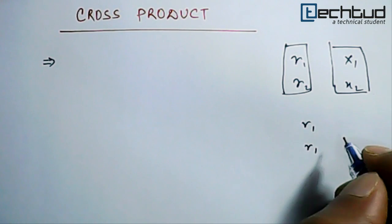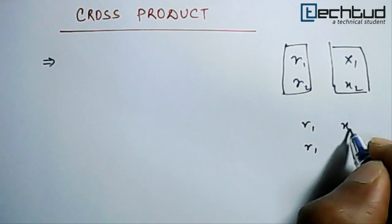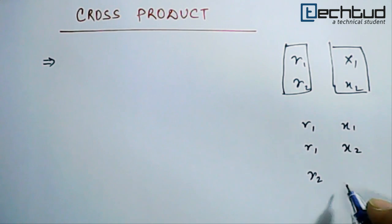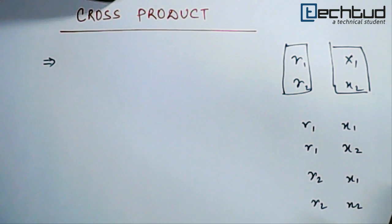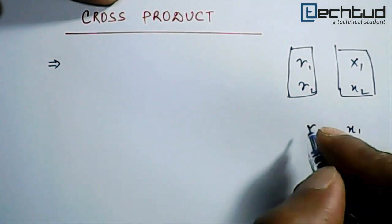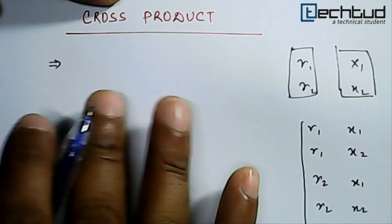Then with R2 you have combination both, that is X1, X2. So it returns you all the possible combination of the rows. So this is basically cross product.